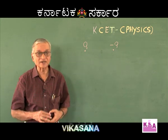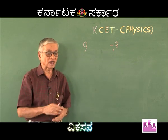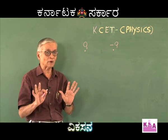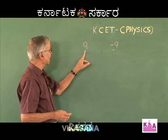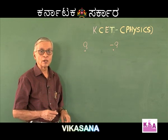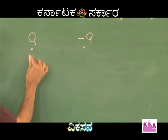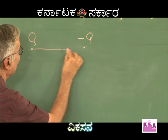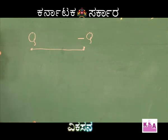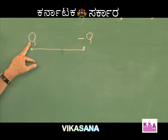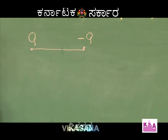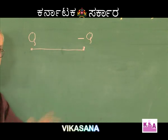Let me once again reiterate what I told earlier and try to make the points clear to you. The charges are opposite. Therefore, the null point cannot lie along the line joining them — there cannot be a null point along the line joining them. Since the two charges are Q and minus Q, the null point may be to the left of Q or to the right of minus Q.